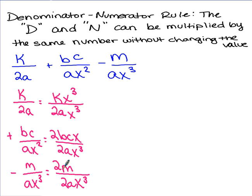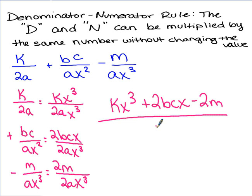Now we have like denominators. However, we can't combine like terms because we don't have the same variable part. So all we're going to do is rewrite our solution over one denominator: kx cubed plus 2bcx minus 2m and it is all over the common denominator of 2ax cubed. And that is the final solution.